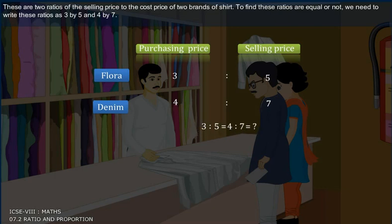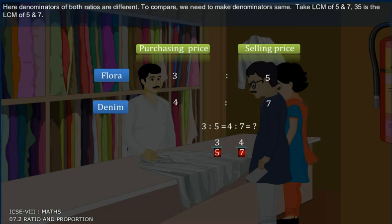These are two ratios of the selling price to the cost price of two brands of shirt. To find these ratios are equal or not, we need to write these ratios as 3 by 5 and 4 by 7. Here, the denominators of both ratios are different. To compare, we need to make denominators same. Take LCM of 5 and 7, 35 is the LCM of 5 and 7.